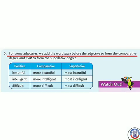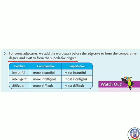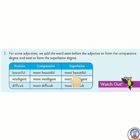Now for some adjectives, we add the word 'more' before the adjective to form the comparative degree and 'most' to form the superlative degree. Kuch adjectives mein, hum comparative degree mein 'more' add karte hain aur superlative degree mein 'most' add karte hain. For example: beautiful, more beautiful, most beautiful. Intelligent, more intelligent, most intelligent. Difficult, more difficult, most difficult.